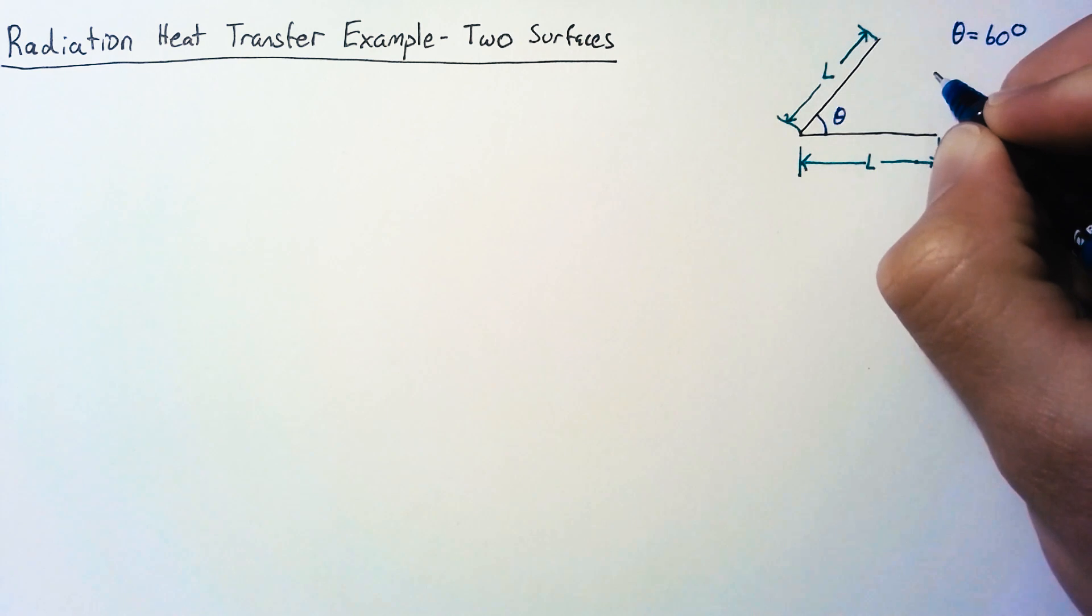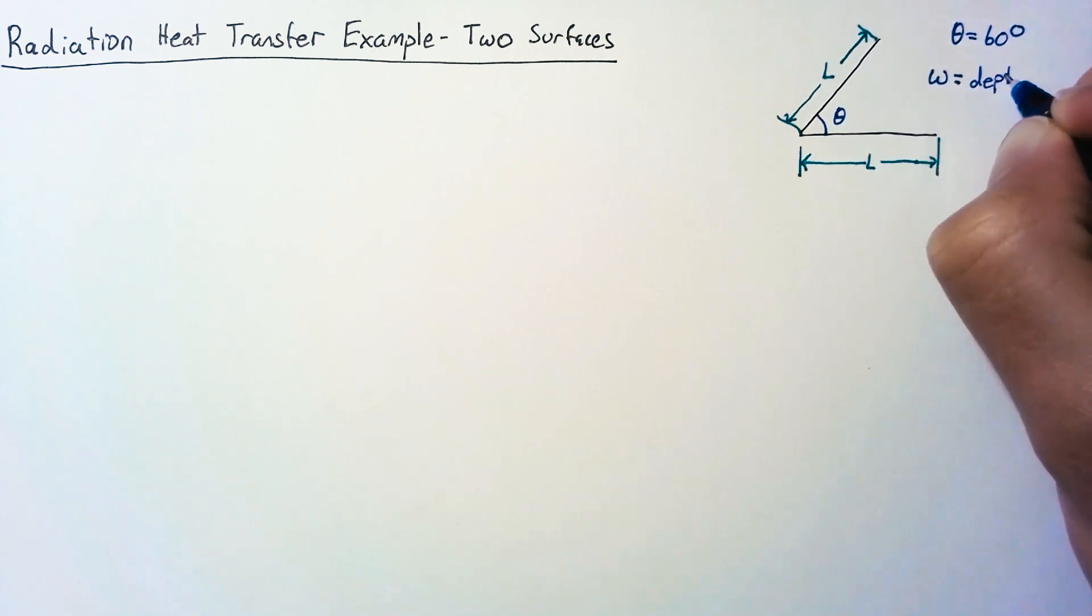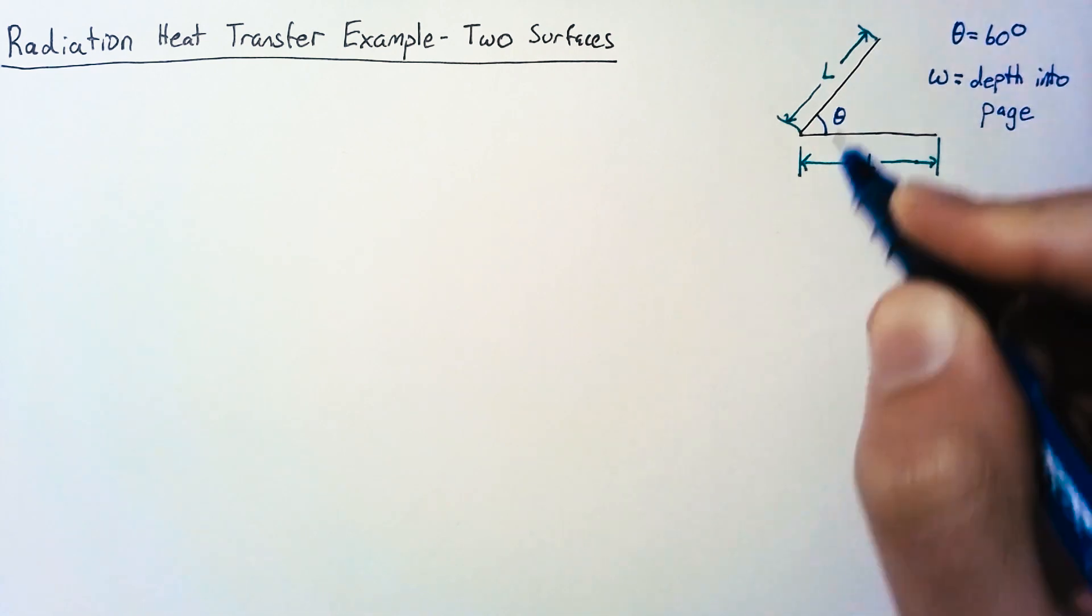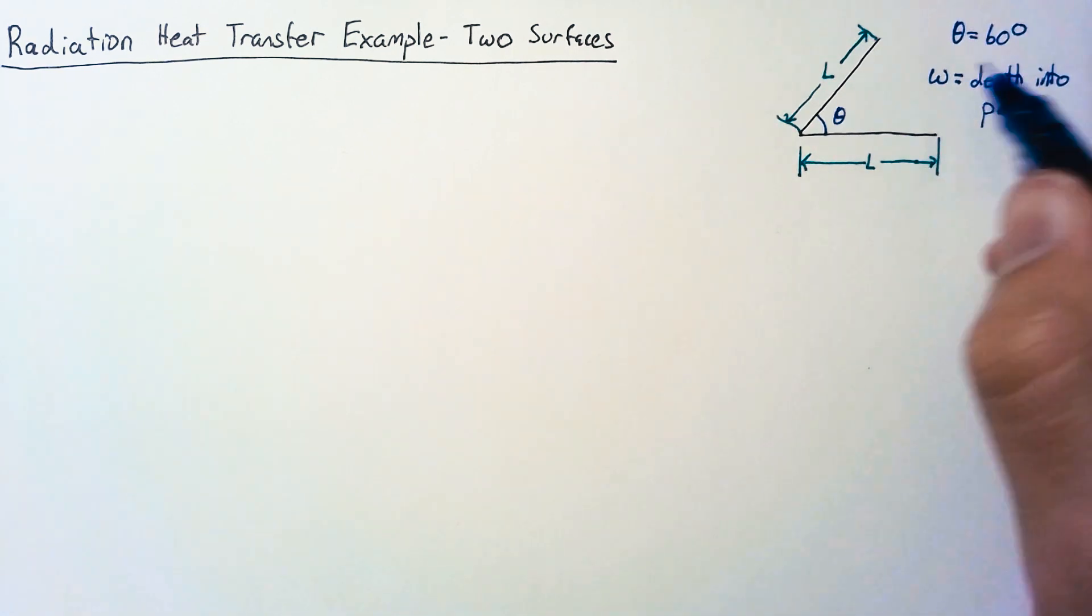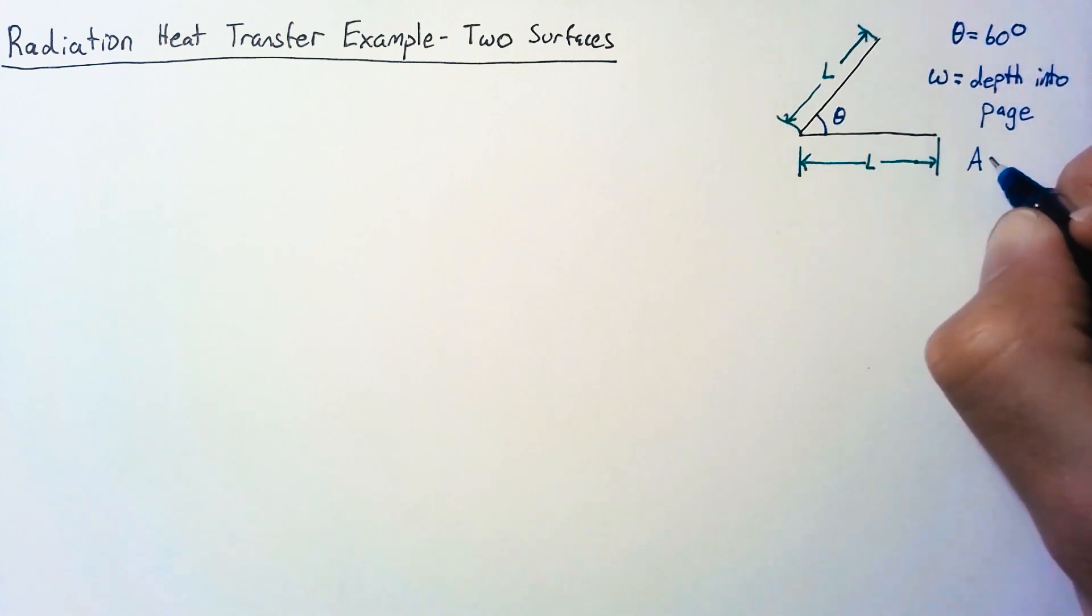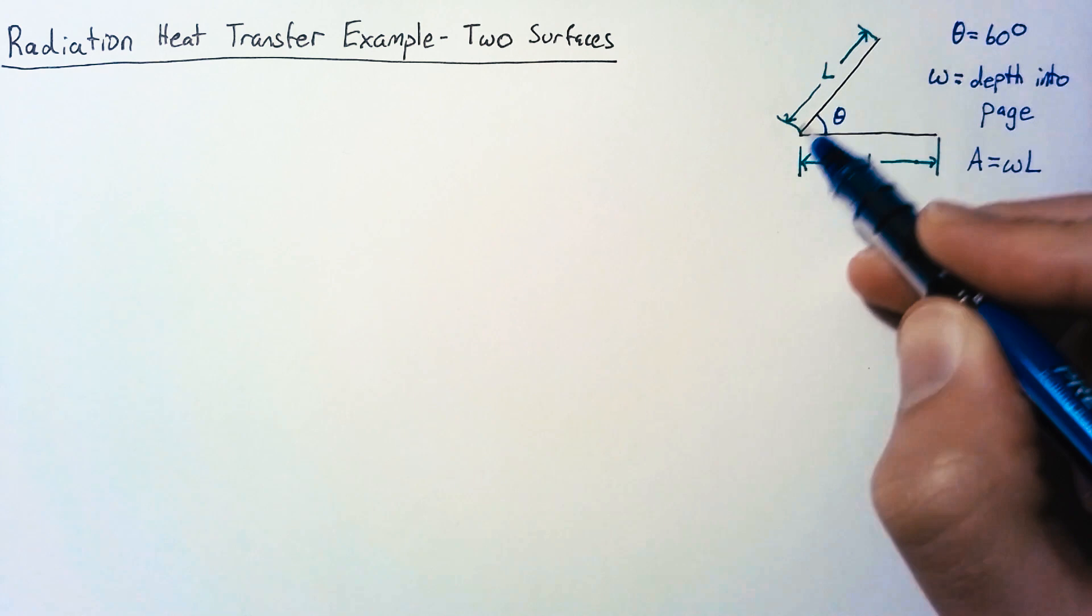We're going to define some w, which is the depth that we're considering into the page. If this is a properly 2D problem, these plates should be infinitely long. But if we consider just some part of it w, then we can define an area which is going to be equal to w times l, and that will be the area of either plate.